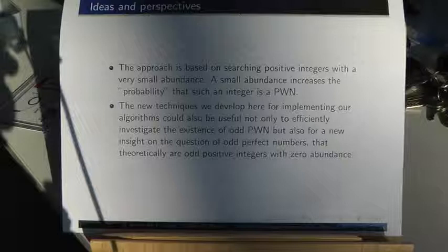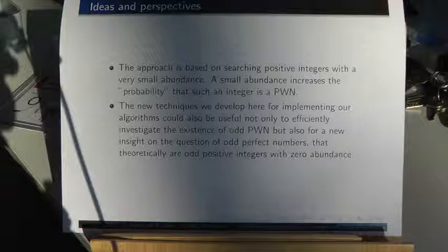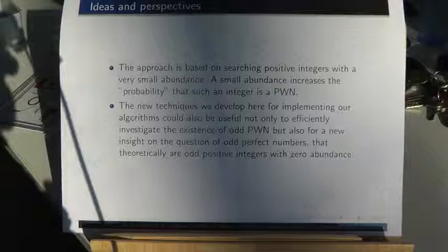The approach is based on searching positive integers with very small abundance. A small abundance increases the probability, in a certain sense, that such an integer is a primitive weird number.